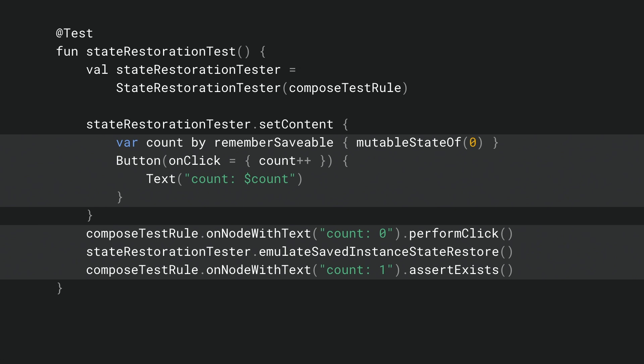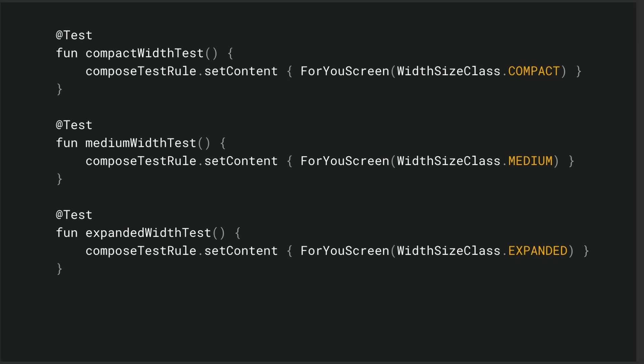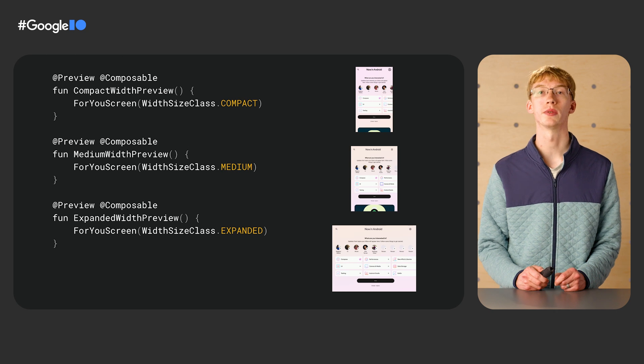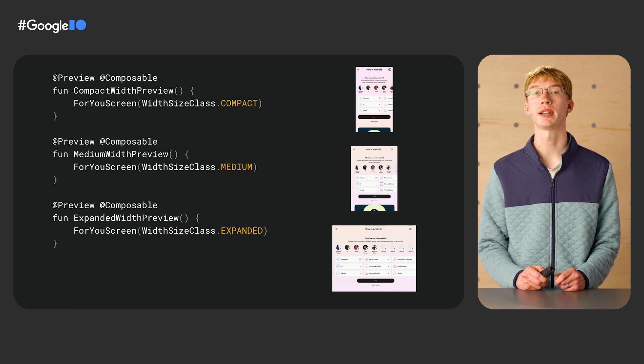On the UI side, let's look at tests for our For You screen. By hoisting the window size class, we can write tests for each of our screen sizes in isolation by directly specifying the size class parameter. For example, we have template tests for the three different width size classes. By adding tests for various states, we can verify that our UI is what we'd expect at each size class. This hoisting also makes it easy to write previews for different screen sizes, since we are explicitly declaring which size class to use, letting you see how changes impact each screen configuration in the Android Studio preview window.